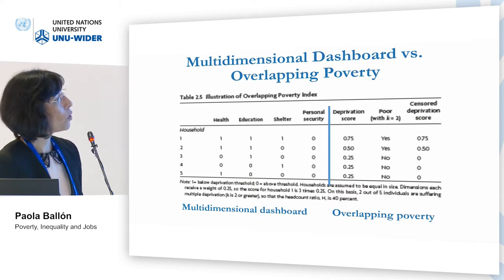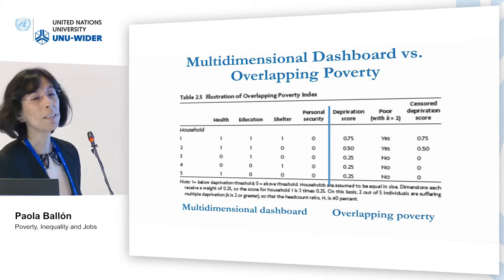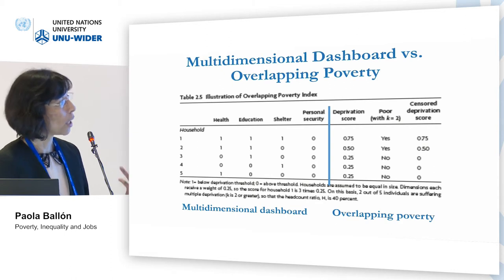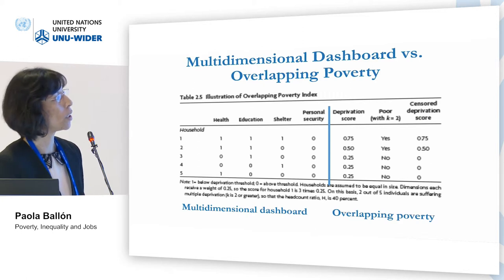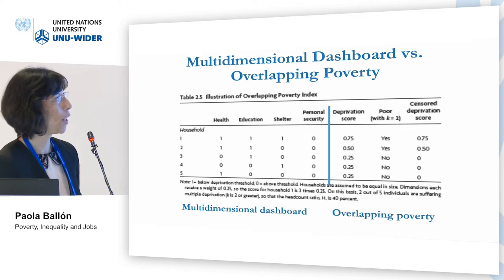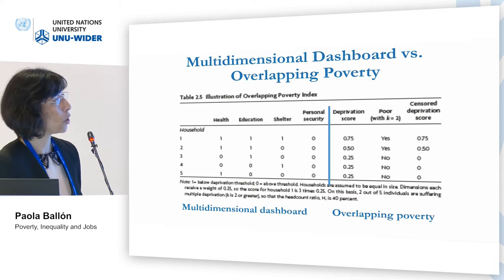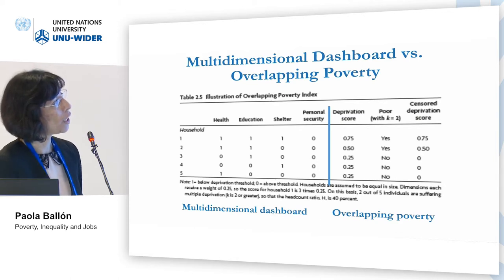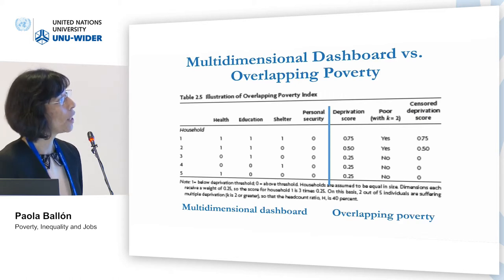This joint analysis, captured by the deprivation score, tells us that household one is deprived in three out of four dimensions — 75% of deprivations. Households three, four, and five experience 25% of joint deprivations, whereas household two has 50%. If we go forward and apply a counting approach with a cutoff, as Professor Foster has shown, we would have two households living in multidimensional poverty and three not. The censored deprivation score is the basic variable of analysis. This side of the table is what we call overlapping poverty.